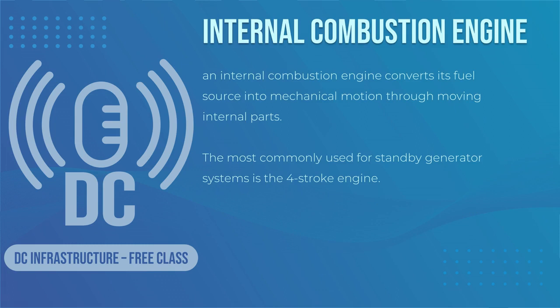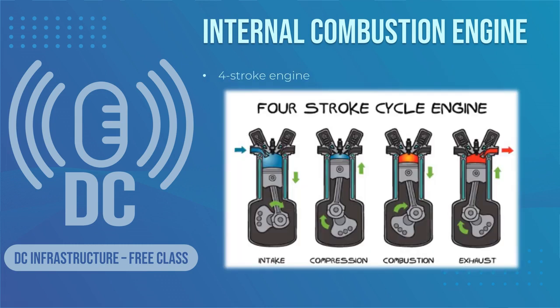Internal combustion engine, or prime mover. In basic terms, an internal combustion engine converts its fuel source into mechanical motion through moving internal parts. When the outside air mixes with the fuel inside the engine, these moving parts ignite the air/fuel mixture to create a controlled internal explosion — combustion — in the cavities known as cylinders. The most commonly used for standby generator systems is the four-stroke engine, named for the four distinct stages that occur in the combustion cycle.